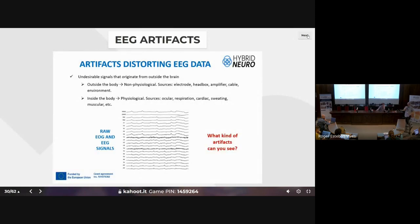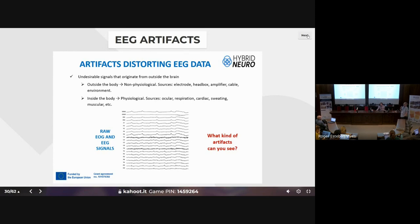Now — do you remember the topic of this session? Artifacts and how to handle them. Once you have all the electrodes configured and your subject is ready, you hit the record button — and you don't get clean EEG; you get a lot of noise and strange things. You can get undesirable contributions from outside the body — movements, electrical interference — or from inside the body, like ECG or muscle interference.